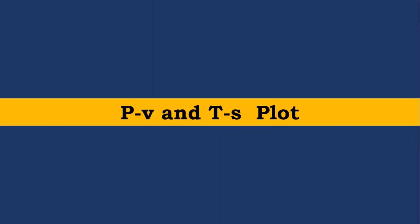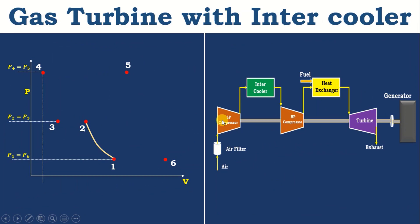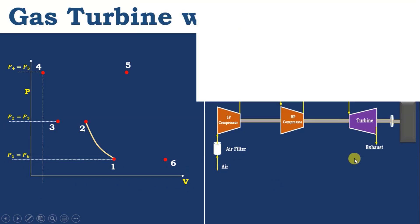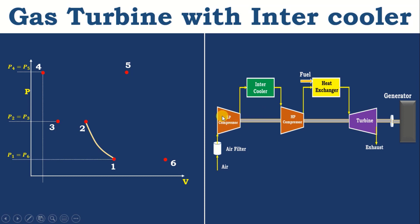Now we will discuss how to draw the PV and TS plot. We know that a gas turbine with intercooler consists of five major components: low pressure compressor, intercooler, high pressure compressor, combustion chamber, and turbine. First, we will see the low pressure compressor. In the low pressure compressor, air is compressed isentropically where pressure and temperature increase, but entropy remains constant.